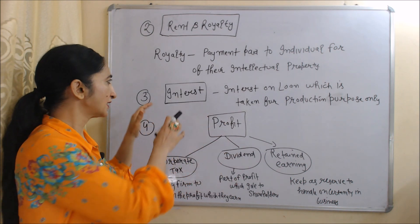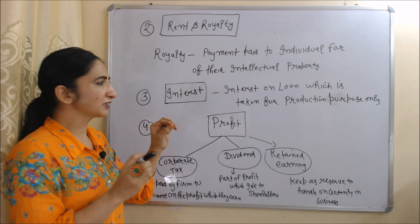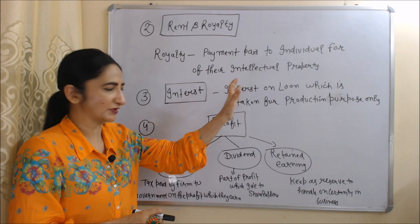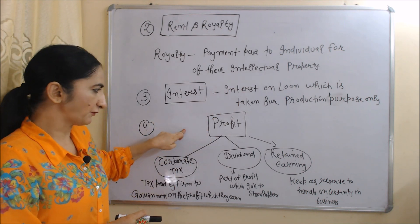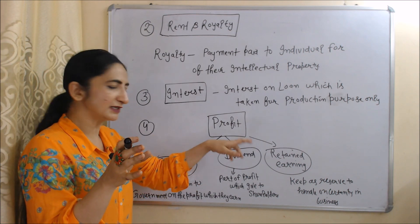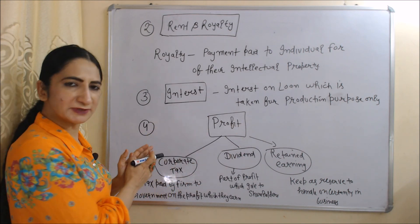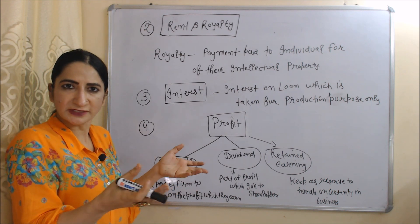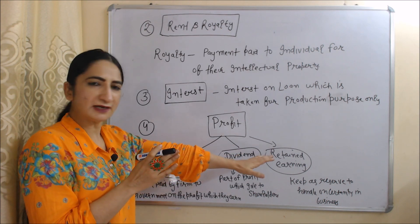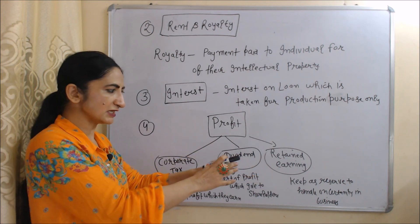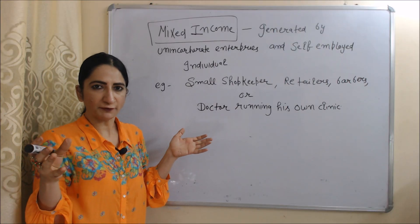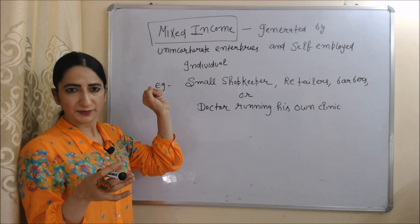Third component is interest — here we only include interest on loans taken for production purposes, not any other interest. Next is profit, which is mainly distributed into three parts: corporate tax (tax paid by a firm to government on profit they earn), dividend (part of profit given to shareholders), and retained earnings (part of profit kept as reserve to handle business uncertainties).